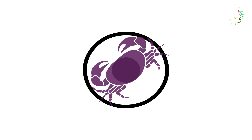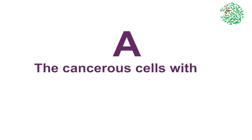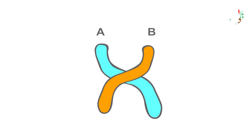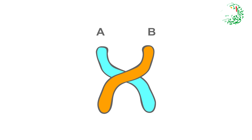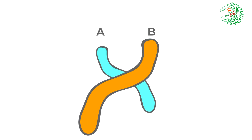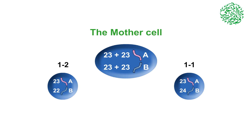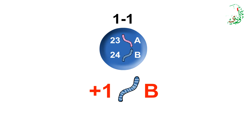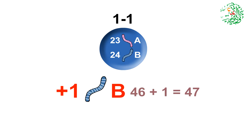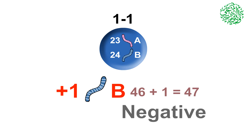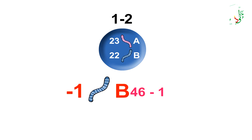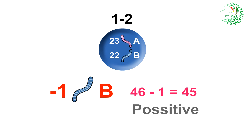Cancer cells can be divided by fundamental structure into categories. Category A: cancerous cells with a chromosome of set B. The set A chromosomes of these cells divide correctly, but the set B chromosome's division faces errors. Thus, each divided cell has unequal set B chromosomes. Cancerous cell number 1 has one extra chromosome B, 47 chromosomes total, and overall negative charge. Cancerous cell number 2 lacks one chromosome B, has 45 chromosomes, and overall positive charge.